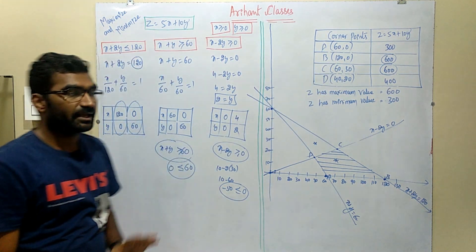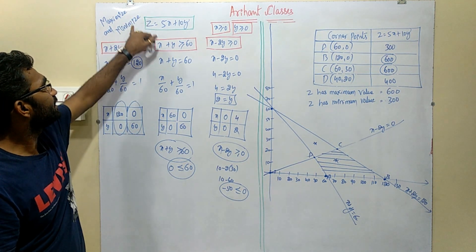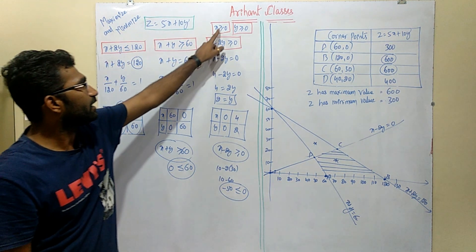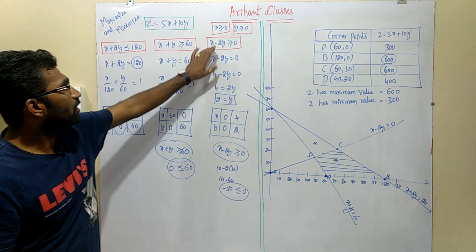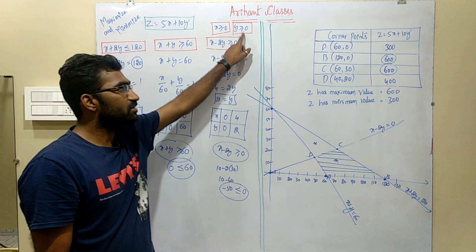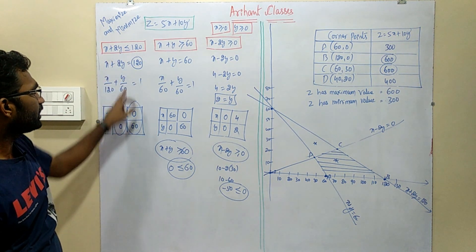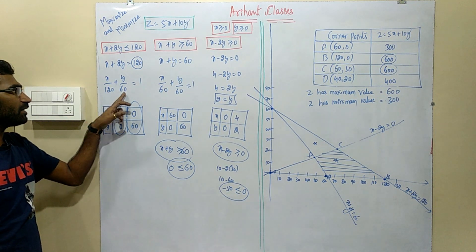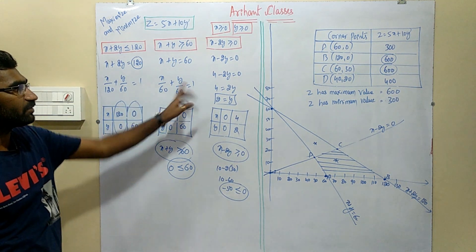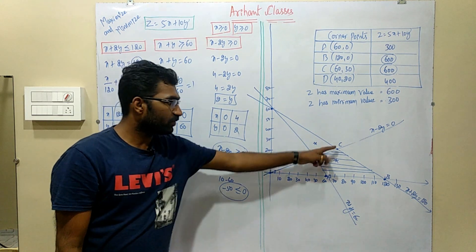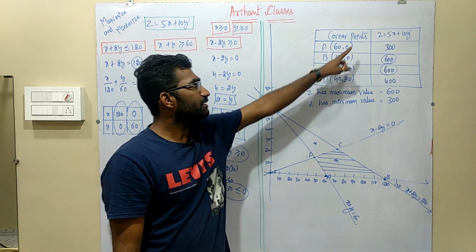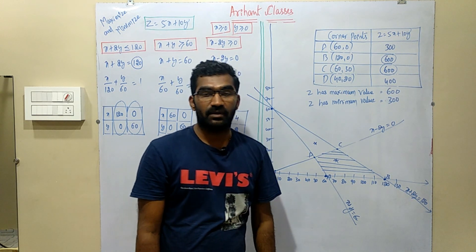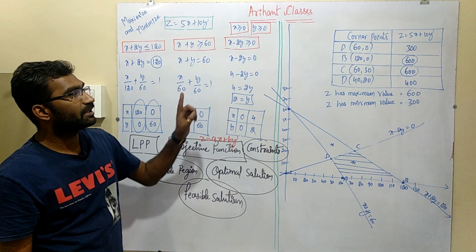To summarize the method: we have to draw all the straight lines corresponding to the constraints. With x ≥ 0 and y ≥ 0, we work in the first quadrant. We convert each inequality to intercept form to find the x and y intercepts. The feasible region is then identified, its four corner points are found, and these are substituted into the objective function z. The highest value gives the maximum and the lowest gives the minimum.